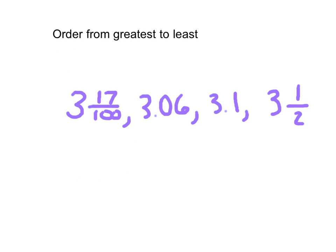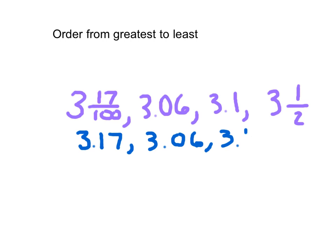I might be given this problem to order from greatest to least. So when looking at this problem, following that same strategy and approach, I can very clearly see that I can rewrite 3 and 17 hundredths as 3.17. I'll rewrite them all this time so I can see them all on one nice line. 1 half I remember as being 0.5.